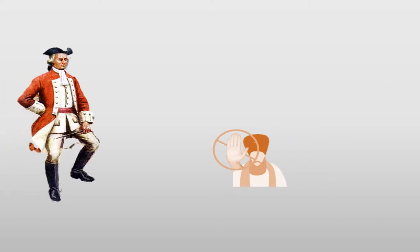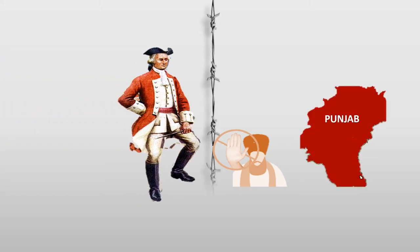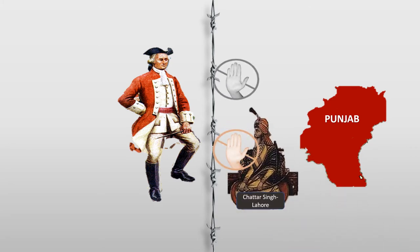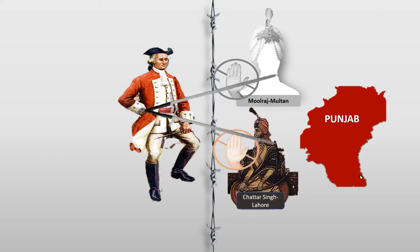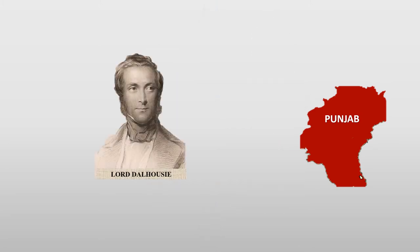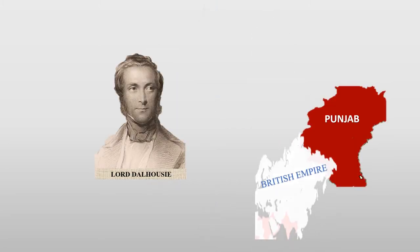The Sikhs opposed the attempts by the British to rule Punjab directly. The opposition was led by Chattar Singh Atharivala in Lahore and Molraj in Multan. Again, the people of Punjab were defeated. Finally, Lord Dalhousie merged the state of Punjab with the British Empire.